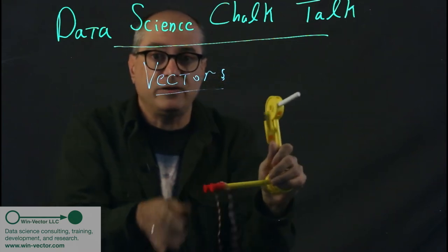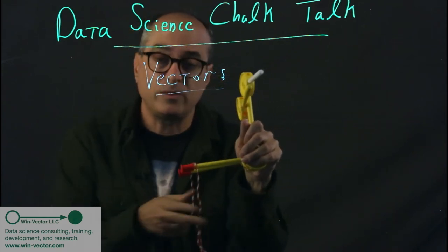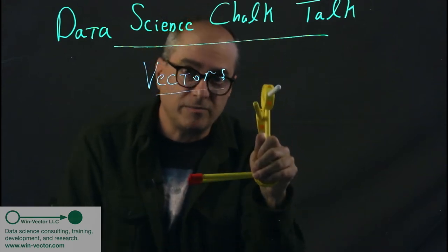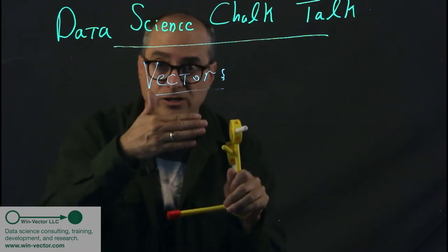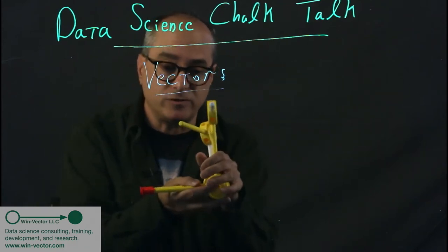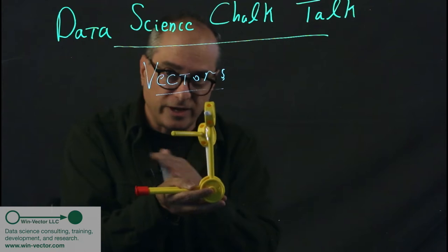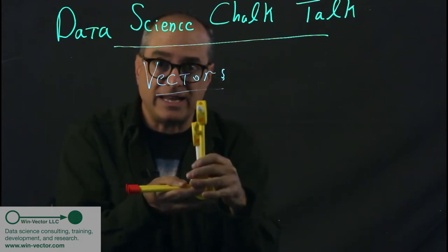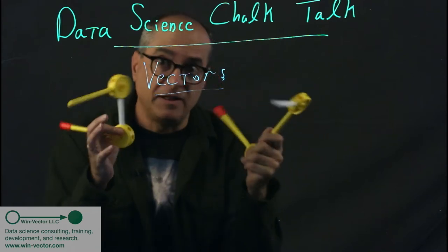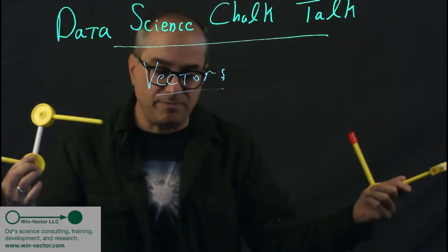This brings us to how we use vectors in data science. We want to know, are these two vectors similar or not? And these vectors might not be three-dimensional, they might be four-dimensional, which I can no longer portray. I'm out of directions. After horizontal, vertical, and in, I don't have any more dimensions I can use, so I can't build a faithful four-vector out of tinker toys in my space.